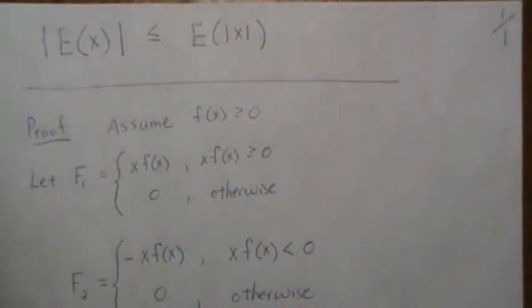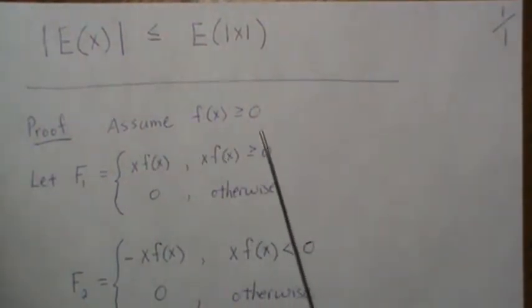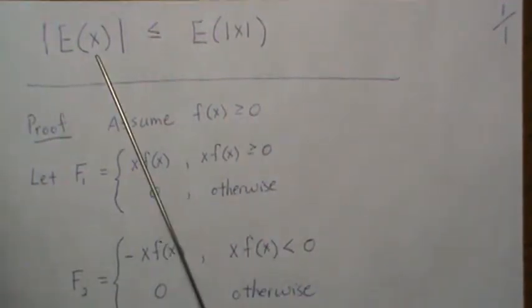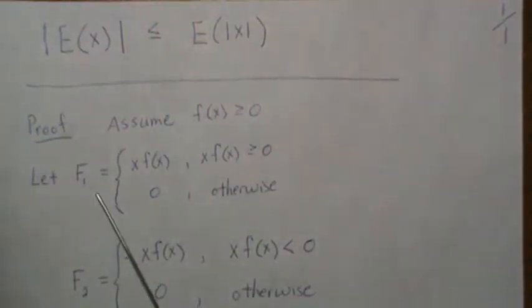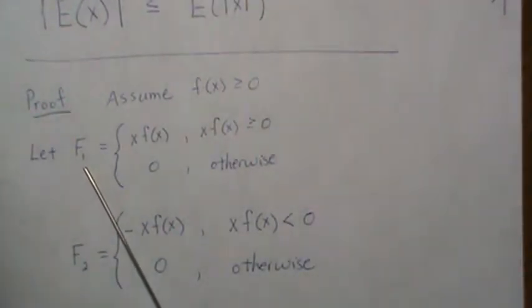Here we're going to assume that our PDF is positive or zero, which is a very safe assumption. We're going to create two sub-functions. F1 is going to be where this piece is positive and zero otherwise.